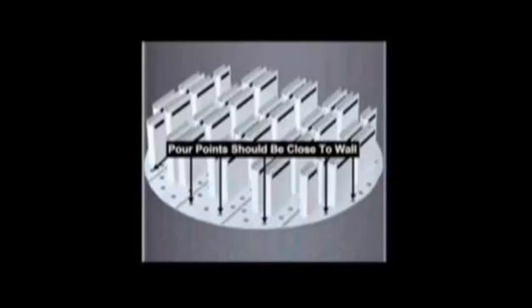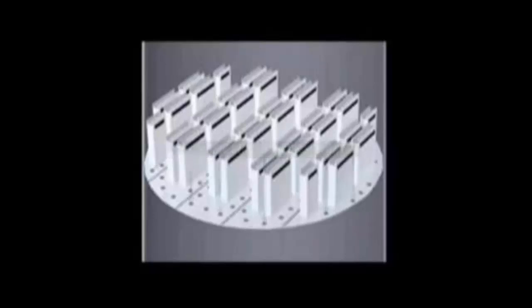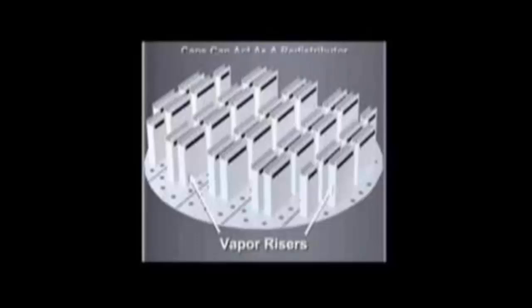Special attention should be placed on including pour points in the vicinity of the wall to within 25 mm. The vapor risers must be designed to accommodate the expected variations in flow rate. Since the risers have caps, the device can act as a redistributor, as the caps prevent liquid from entering the risers.